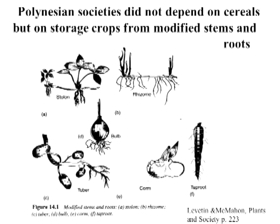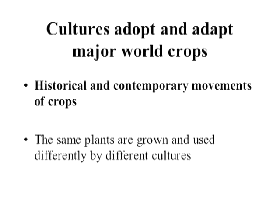Most civilizations have depended on a grain and a legume as the basis of their sustenance, but certainly not all. Polynesian societies are a great example of a great society that did not depend on cereals, but rather on storage crops from modified stems and roots — taro or kalo, sweet potato, ape, etc. The major world crops today are all native to one part of the world where they were domesticated, then spread through trade, and as they moved, cultures adopted and adapted them to their own cultural traditions.